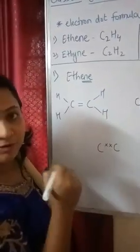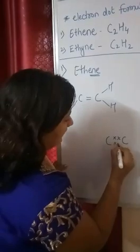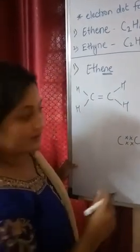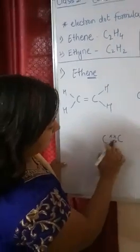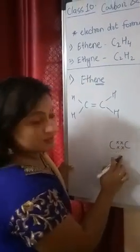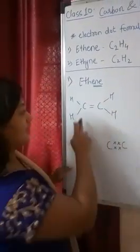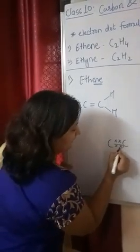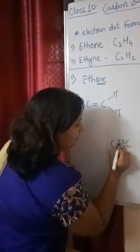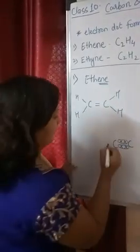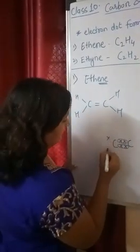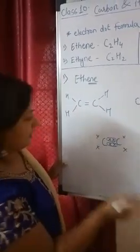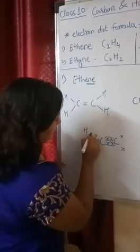That means this electron and this electron form one bond, and another electron of this carbon and another electron of this carbon form another bond. So these electrons represent the double bond present in the carbon. For example I can show it like this — this is the double bond in the carbon — and these two electrons of the first carbon and these two electrons of the second carbon. Now we will show the hydrogens.